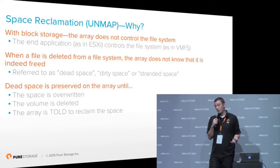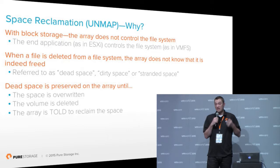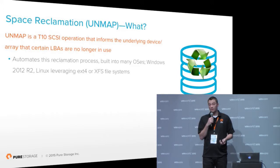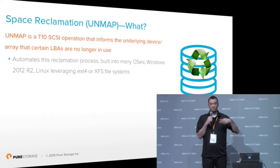So how do you remove that space? There are a couple of different ways. You can either overwrite that space with data, zeros, whatever. You can delete the underlying volume — that will, of course, tell the array that it's gone. Or you can actually tell the array to reclaim that space somehow. This is through unmap. Unmap is a T10 SCSI command that tells the underlying array that this space is no longer used by the file system, so it can delete it, remove it, mark it to be removed, whatever.